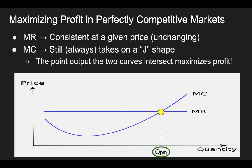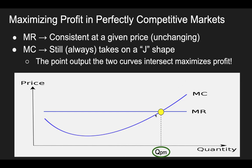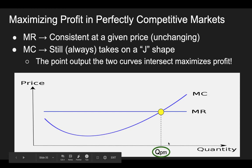In perfectly competitive markets — and we're going to practice this a lot more — marginal revenue is consistent. The reason is that price is never changing because no firms have actual power in perfect competition. So if no firms have any power, they're all going to charge the same price. The marginal cost curve, as we talked about, always takes on this J shape. So for perfectly competitive firms individually, this is what their marginal revenue curve looks like, and this is what their marginal cost curve looks like. Wherever those two things meet, that is the profit maximizing quantity for that perfectly competitive firm.